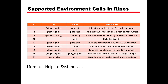The supported environment calls in RIPES are listed in a table. To print an integer, set A0 to the integer value and A7 to 1, and it will print the value in A0 as a signed integer. There are also options for float, pointer, char, print as hex, print char, and others by setting different values in A7.